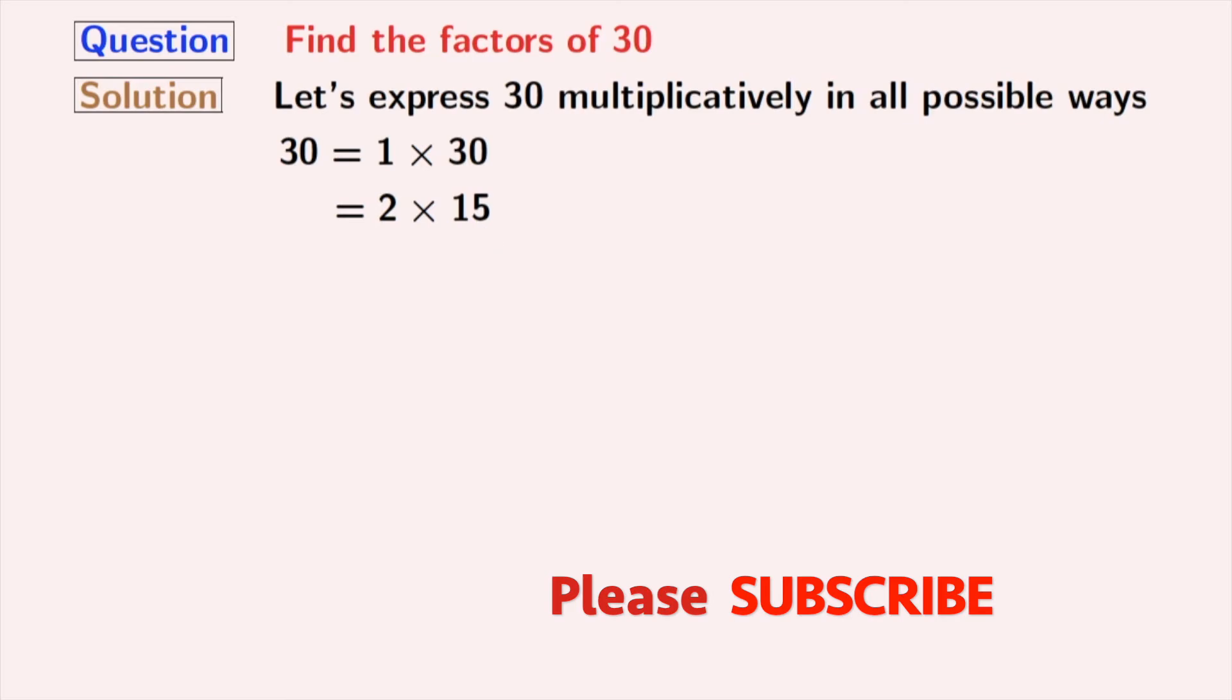Now try for 3, and look that 3 times 10 gives us 30. Now it's time for 4, but 4 does not divide 30, so we will try for 5. And look that 5 times 6 gives us 30.